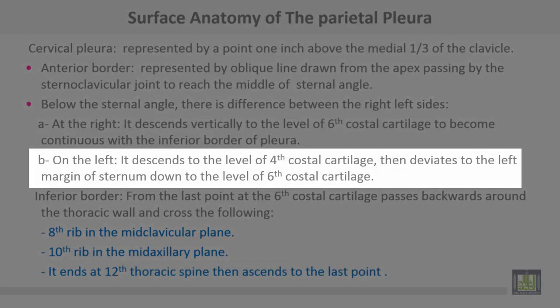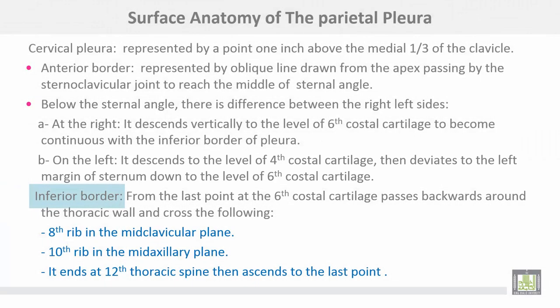On the left, it descends to the level of the 4th costal cartilage, then deviates to the left margin of the sternum down to the level of the 6th costal cartilage. Inferior border: from the last point at the 6th costal cartilage, it passes backward around the thoracic wall, crossing the 8th rib in the mid-clavicular plane, the 10th rib in the mid-axillary plane, and the 12th thoracic spine.